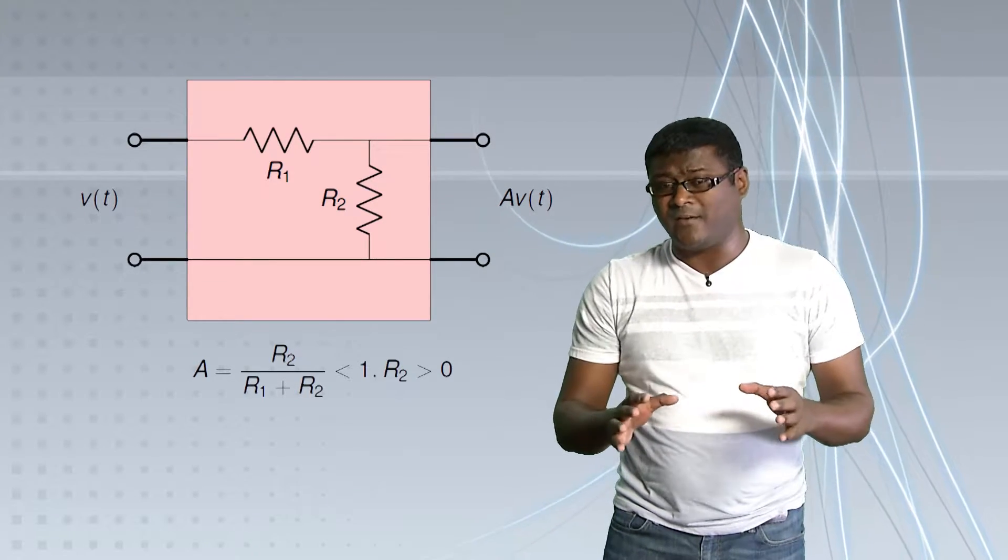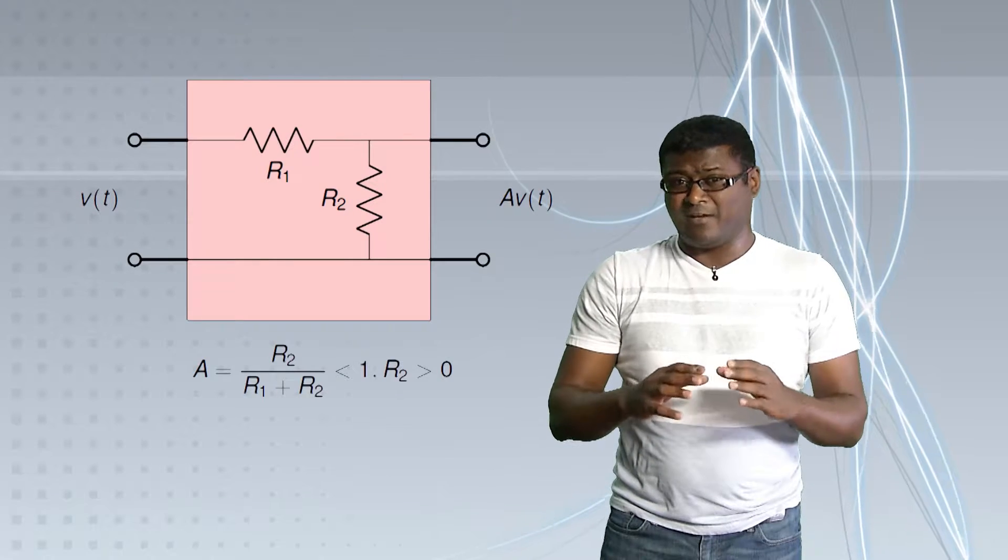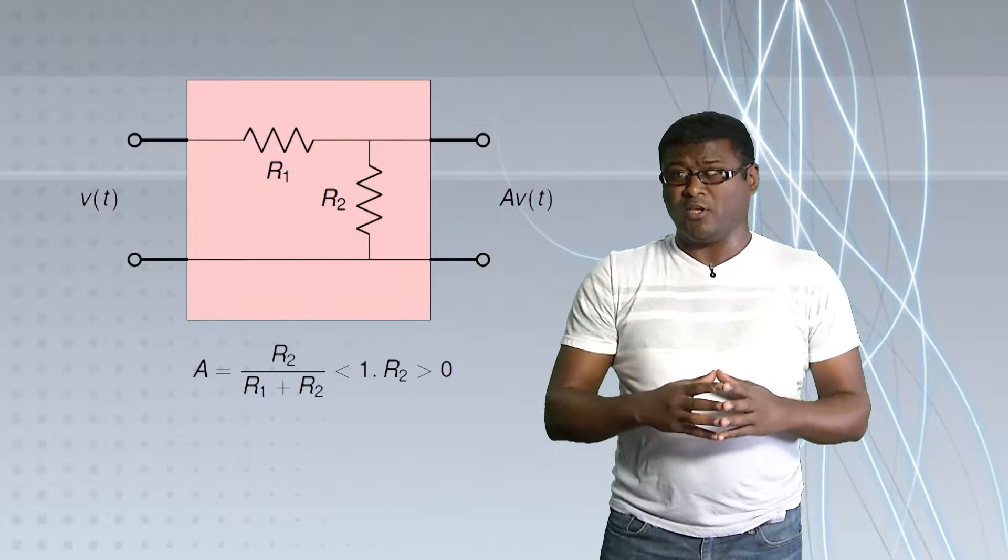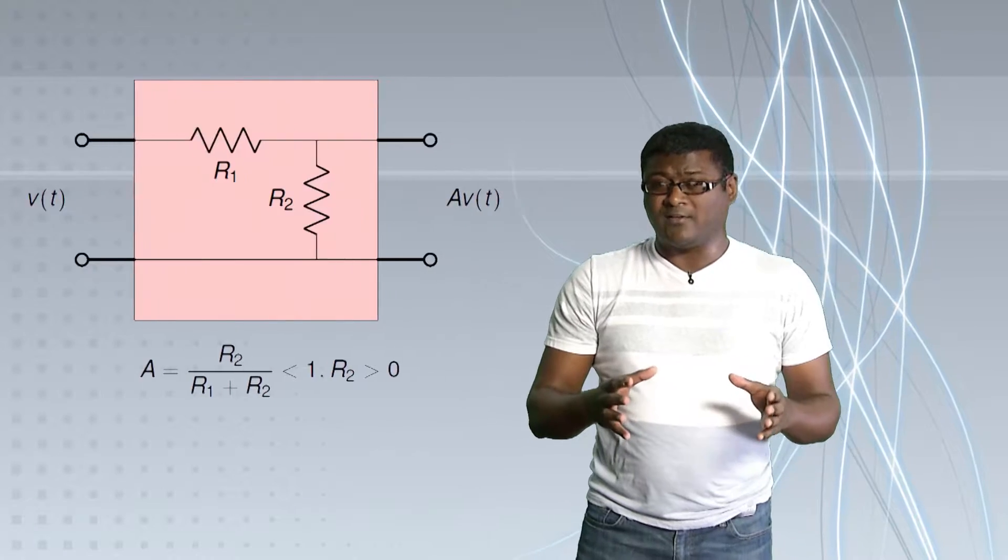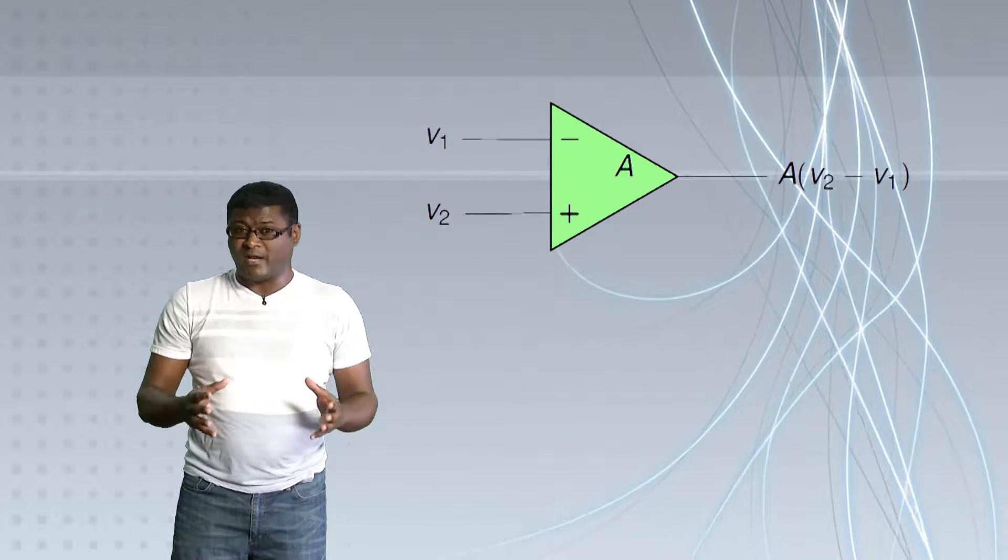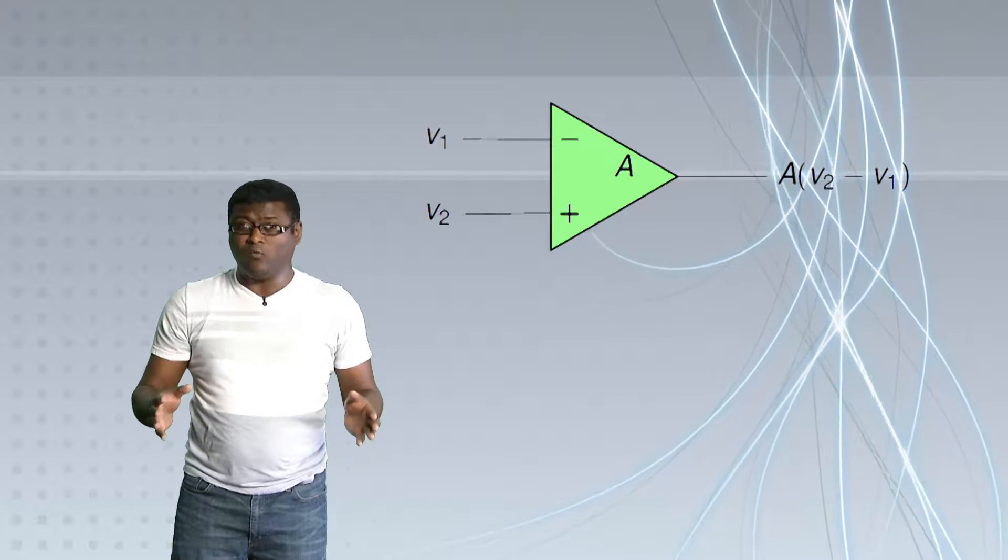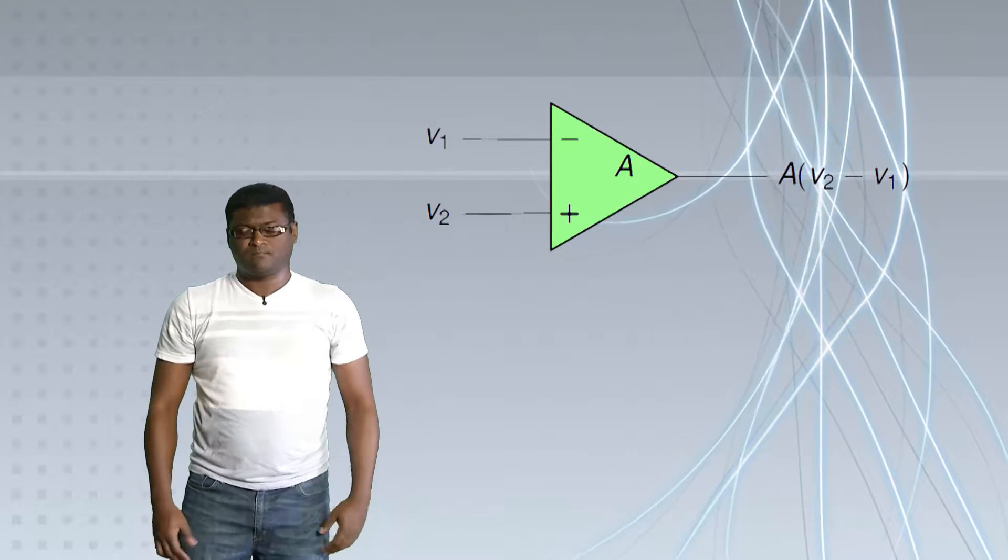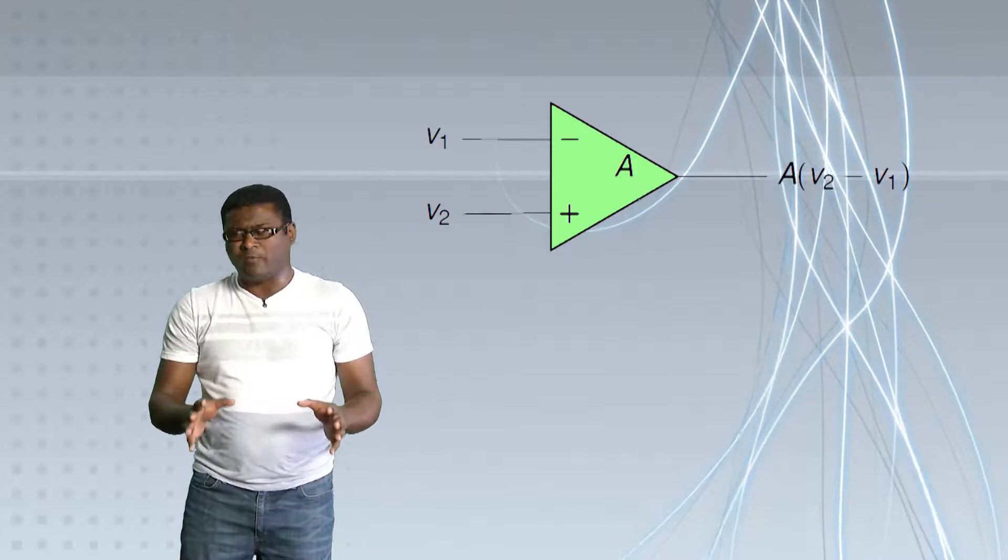In order to get a gain constant greater than one, we are going to use some very commonly available ICs called op amps. And we are going to use that to make any gain we want. Let's talk about operational amplifiers.